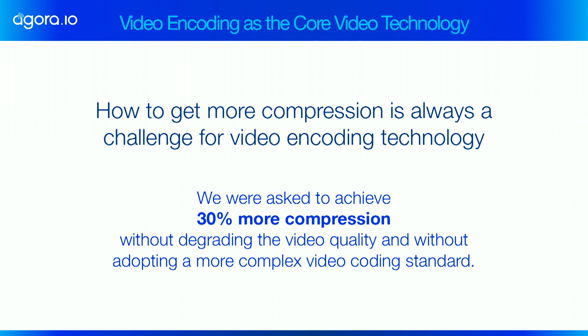A video encoder compresses raw video data and converts it to a compressed bitstream. Over the years, we have been facing constantly the challenge of trying to achieve more compression. Last year, we were asked to get 30% more compression without degrading the video quality and without switching to a more complex video coding standard. And in real-time video communication, we don't have the luxury of utilizing many offline encoder tools such as multiple-pass video encoding.